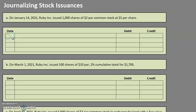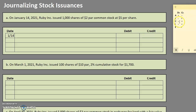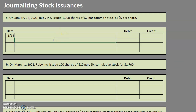For this first one, we have the date of January 14th. Let's start analyzing it to pick out what accounts are being affected. Starting with common stock — the company is giving out common stock. If we analyze our rules, we can figure out if that's going to be a debit or credit. Common stock, which is ownership within the corporation, is a capital account. If we are issuing those shares, then ownership within the company is increasing. Capital increases with a credit, so we're going to start by crediting common stock.